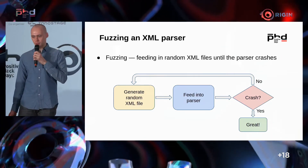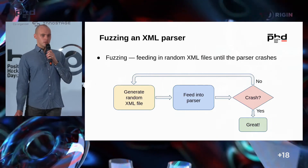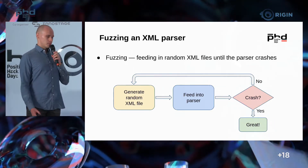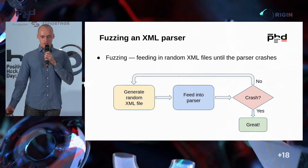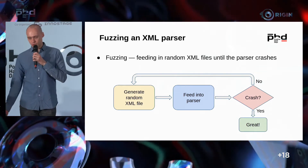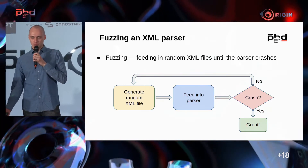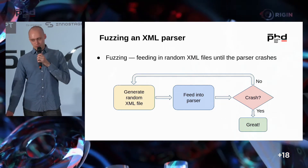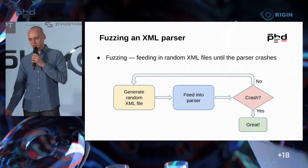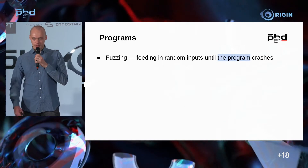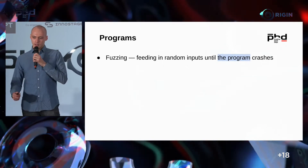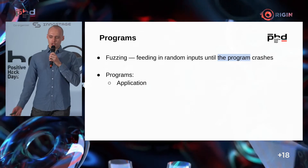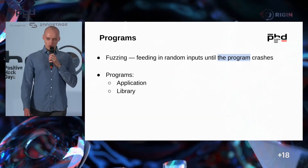The software should be resilient to wrong inputs. For example, let's take an XML parser and fuzz it — we need some random files, put them into the parser, and if the parser crashes, we've found a bug. If not, we generate a new one and continue fuzzing.